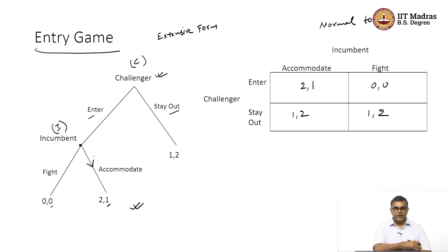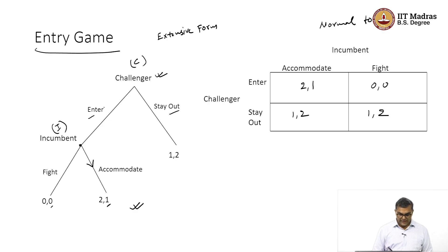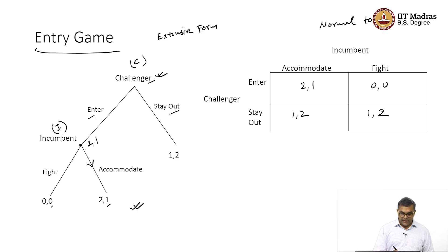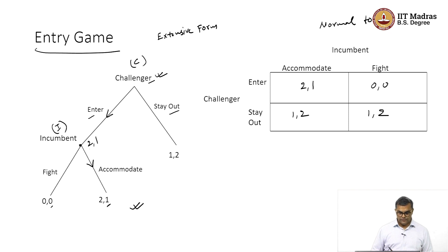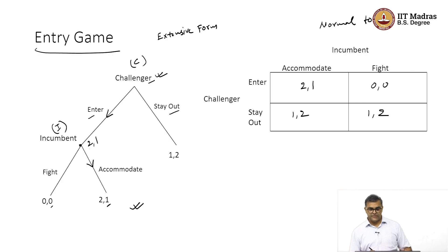So the game will move in the direction of accommodate. The challenger, being rational, knows that if it decides to enter the market, the payoff will be 2 to the challenger and 1 to the incumbent. The challenger then compares enter and stay out: enter gives 2 and stay out gives 1, so the challenger decides to enter the market. This is a recap of what we have already discussed.